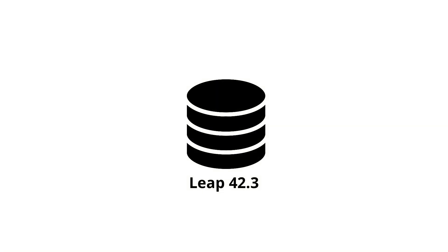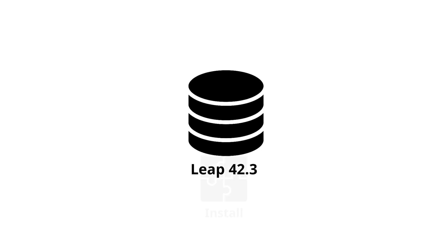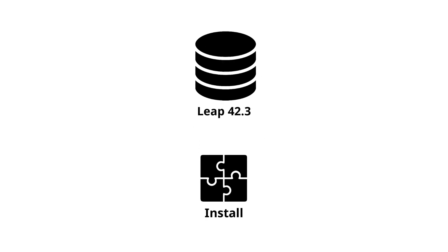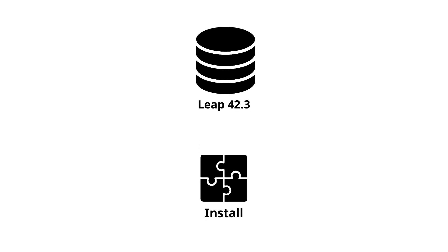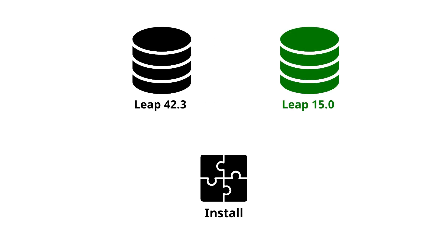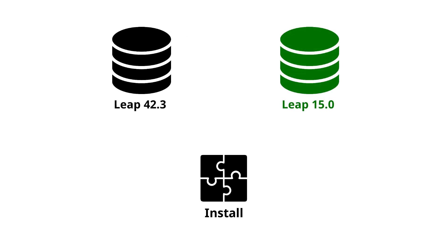Leap is released as a frozen set of packages in a repository. Those packages receive updates via another repository, but the main system remains unchanged. A user has a copy of the packages installed on their machine. Along comes a new version of Leap, which updates the base system and lots of packages. The user may then perform a distribution upgrade to the new version.